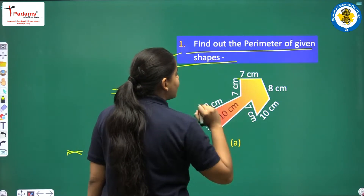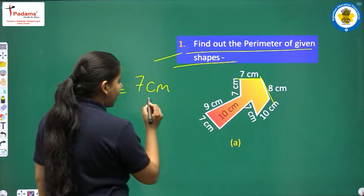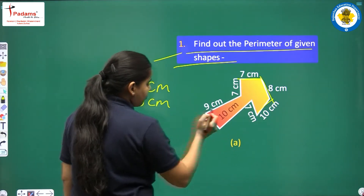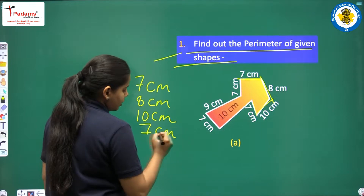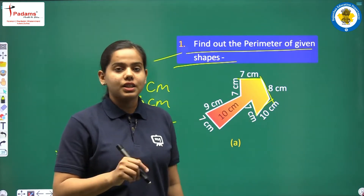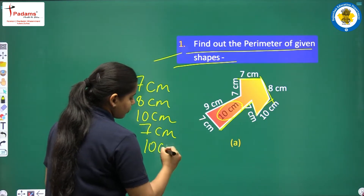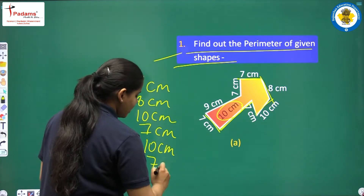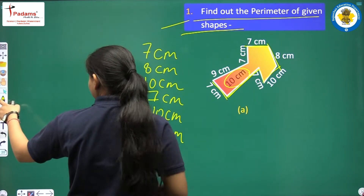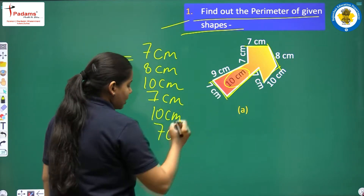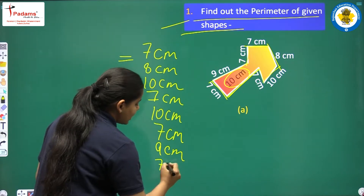We start from 7 cm — one side of the figure is 7 cm. Then we have 8 cm, then 10 cm. After 10 cm we have 7 cm. Children, we have to write cm as it is the unit. After 7 cm we have 9 cm.